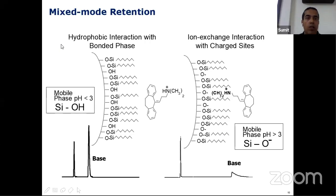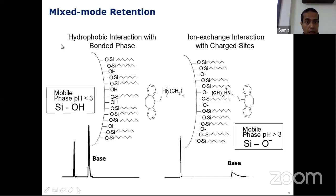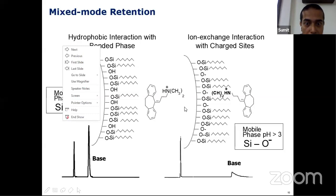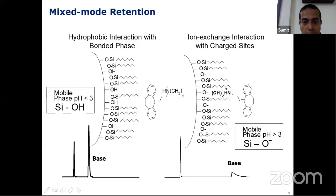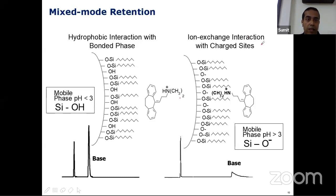We are looking at what we call mixed mode retention. When we have a pH less than three, silanol remains as silanol, and therefore in the presence of a basic compound, we don't have any problem — the positive charge in the basic compound does not pose any problem to the silanol group. But if your pH exceeds three, your silanol tends to get ionized. These silanol ions and the basic compound's positive charge tend to interact with each other — this is what we call ion exchange interaction with charge sites. This interaction competes with hydrophobic interaction with the bonded phase, and your peak tends to tail, which you don't like. Obviously, it causes problems in your chromatography.